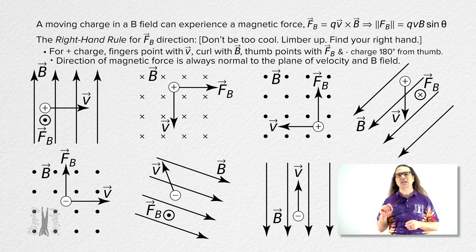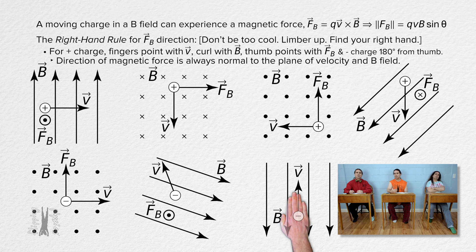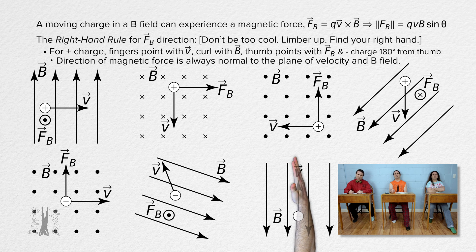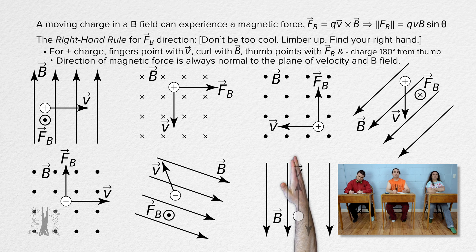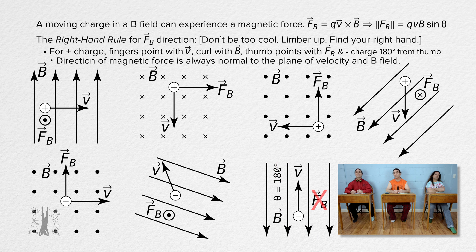One last example. The velocity of the negative charge is up and the direction of the constant magnetic field is down. Fingers point up in the direction of the velocity, fingers curl in the direction of the magnetic field. We can curl our fingers to the right or to the left — why is that? The angle between the direction of the velocity and the direction of the magnetic field is 180 degrees, and the sine of 180 degrees is zero. So in this example, there is no magnetic force acting on the moving electric charge.